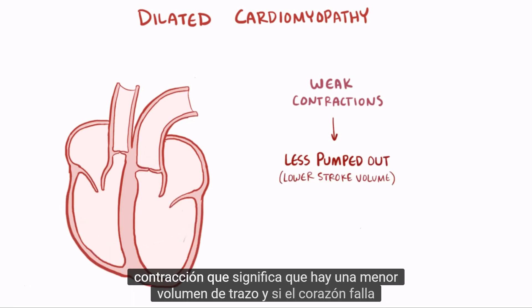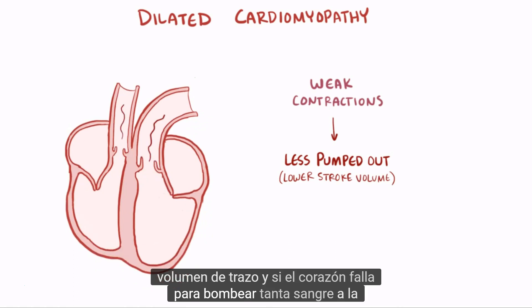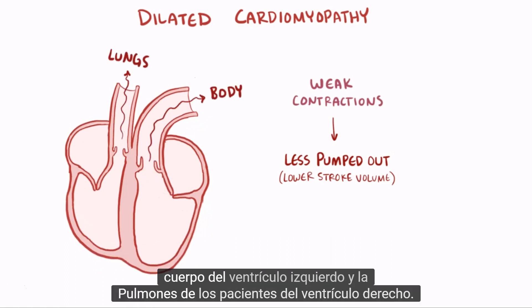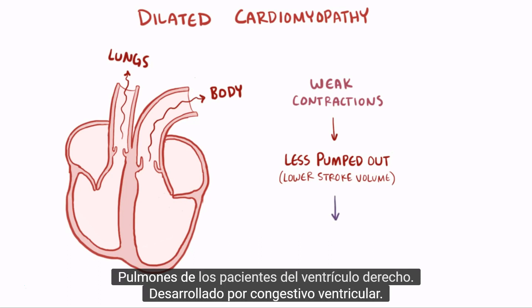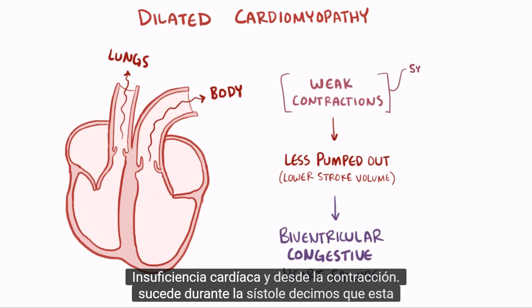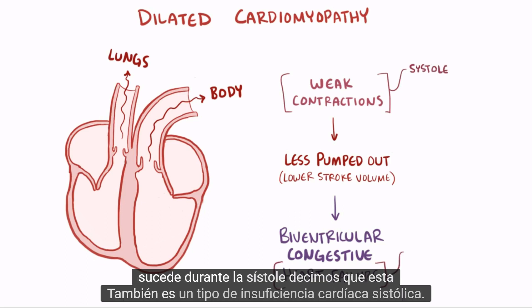If the heart is failing to pump out as much blood to both the body from the left ventricle and the lungs from the right ventricle, patients develop biventricular congestive heart failure. And since contraction happens during systole, we say that this is a type of systolic heart failure.